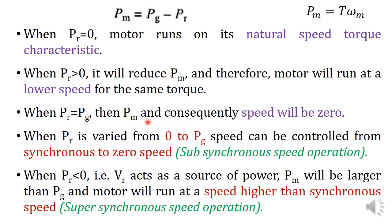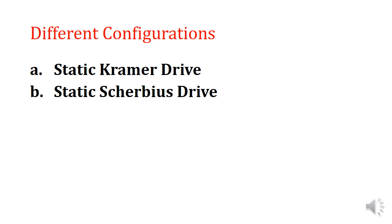The different configurations of slip power recovery schemes are: the first one is the static Kramer drive, and the second one is the static Scherbius drive. The static Kramer drive gives operation in the sub-synchronous range, that is, speed below synchronous speed.